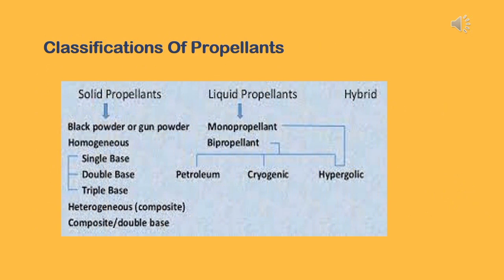Classifications of propellants. Propellants are classified into solid, liquid, and hybrid. Solid propellants are classified into black powder or gunpowder, homogeneous, heterogeneous, and composite or double base. Liquid propellants are classified into monopropellants and bipropellants.